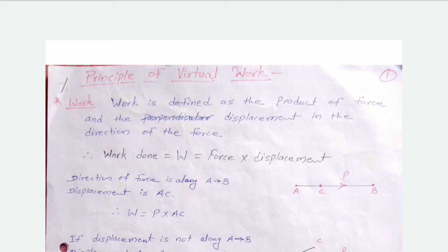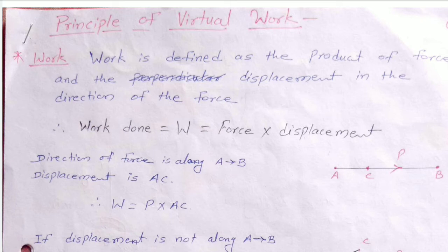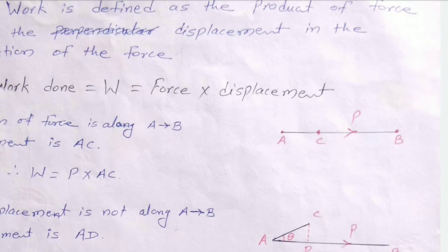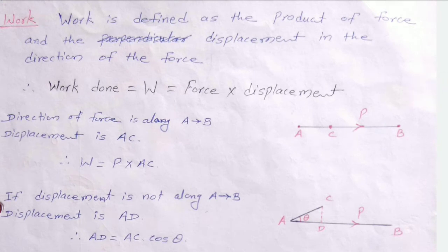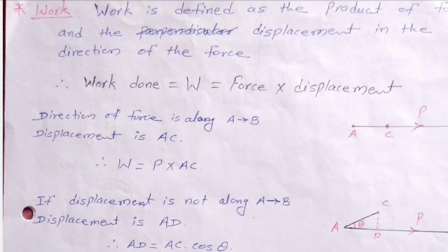The product of force and displacement is called work done. Work is denoted by W, so W equals force into displacement. By the line diagram, if the displacement is in the same direction — A to B is the line, P is the application of force, and A to C is the displacement — then the direction of force is along AB and displacement is AC, so work W equals P into AC.